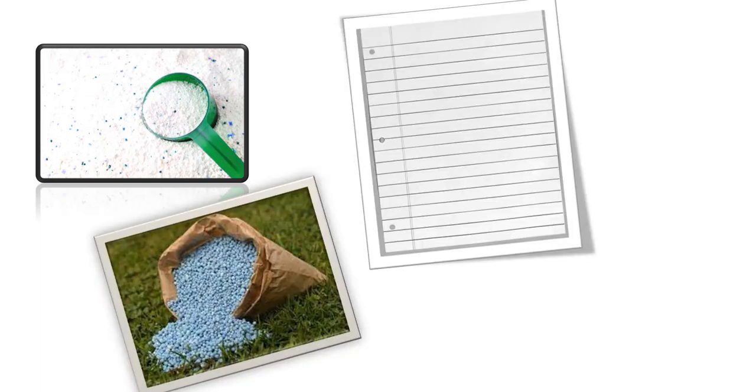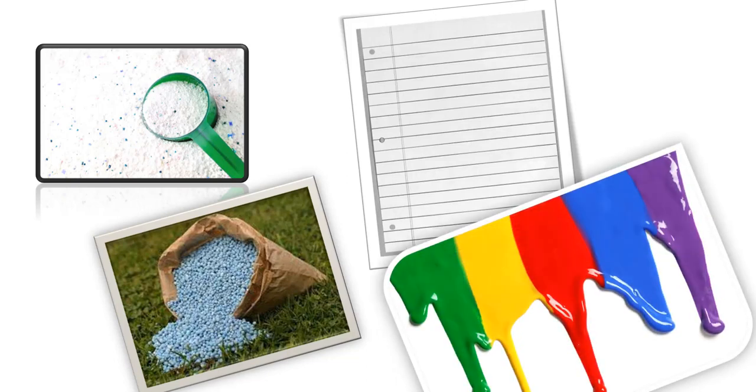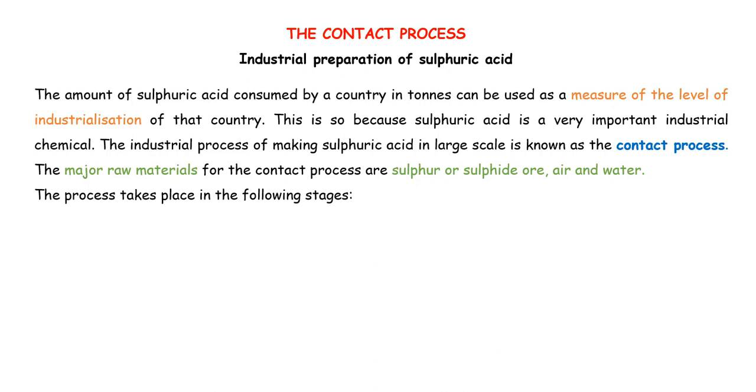Sulfuric acid is used in the manufacture of detergents, fertilizers, paper, paints, among others. However, in this video, we are going to look at how we can manufacture sulfuric acid at industrial level through the contact process.